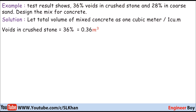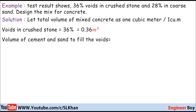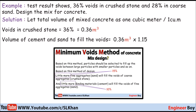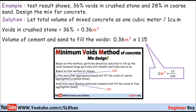Once we have the voids in crushed stone as 0.36 cubic meters, we can calculate the volume of cement and sand to fill those voids. The volume of cement and sand must be the voids in crushed stone, which is 0.36 cubic meters, times 1.15 — meaning one cubic meter plus 15%, since 15% divided by 100 gives the extra fill factor.